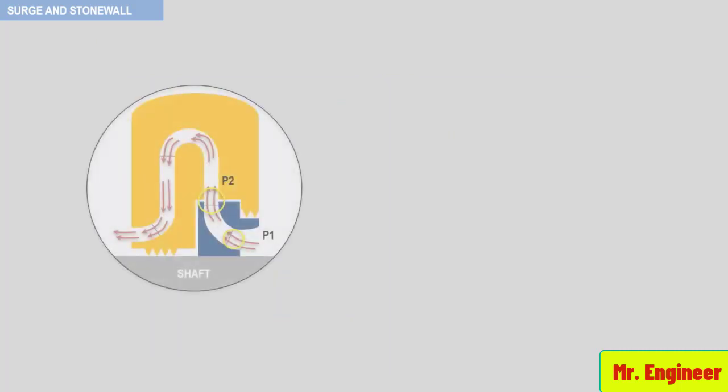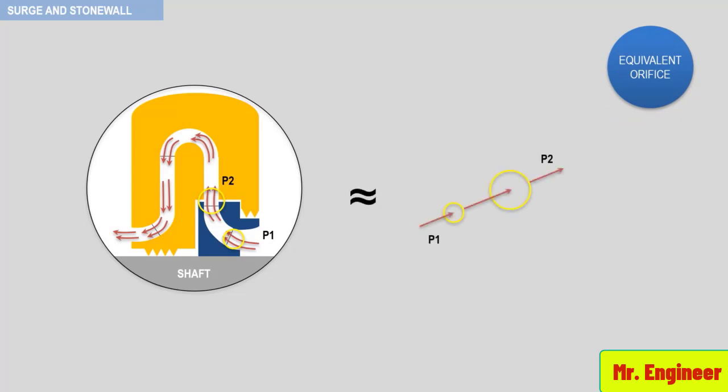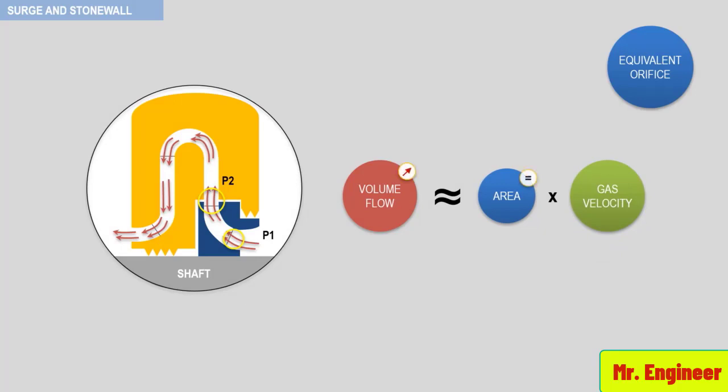If you recall from a previous discussion, any impeller stage is essentially an equivalent orifice with constant flow areas or orifices. Since volume flow is proportional to area and gas velocity, an increase in the volume flow at constant impeller dimensions is a direct increase in gas velocity.